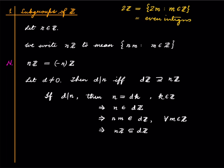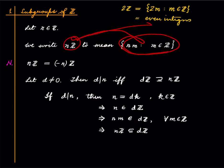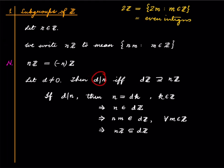So what we have shown is: if d divides n, then dℤ contains nℤ, and you can do the other direction by reversing these steps. Note that if n were 0, this is trivial, and therefore every non-zero integer divides 0 — which is a trivial fact. So to recall: nℤ means all integers divisible by n, and d divides n is the same as saying dℤ contains nℤ.